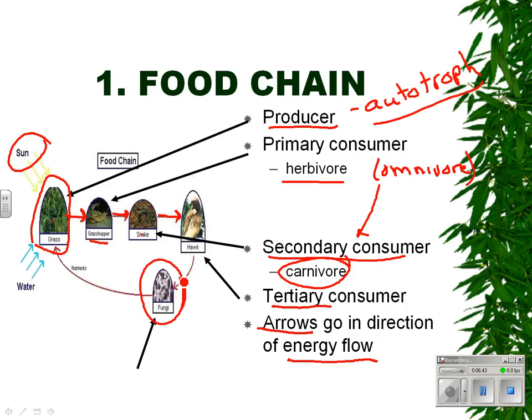On here we also have decomposers — fungi — because fungi are decomposers, as are bacteria, and they aren't necessarily included in a food chain. Not all of the grass gets eaten; some of it decomposes, and then its nutrients are put back in the soil. The fungi use that energy from what doesn't get eaten.